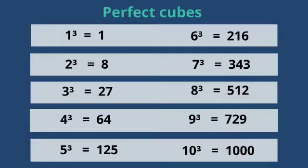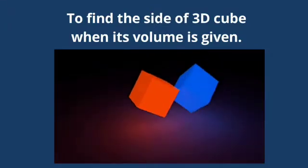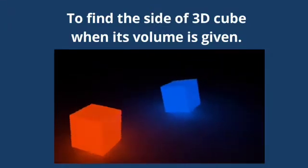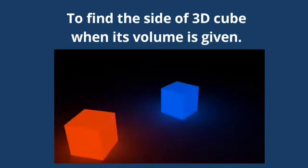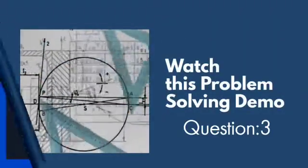There are only 10 perfect cubes from 1 to 1000. Why do we use cube root? If we know the volume of a cube-shaped building and want to find the length of one wall, we use cube root. Or to find the size of a 3D cube when its volume is given.